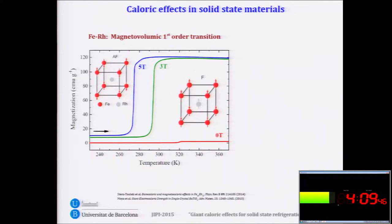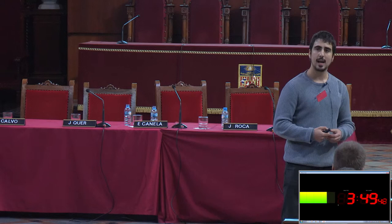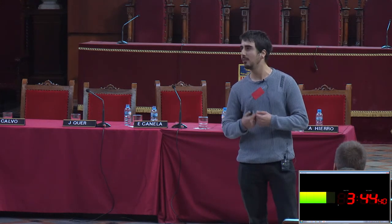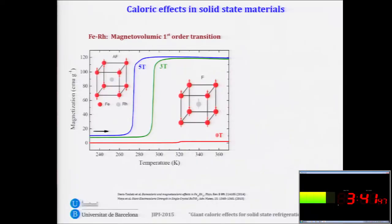For instance, let's see a couple of examples we have studied. We have iron rhodium, which is a very illustrative example, as it has a magnetovolumic first-order transition. Associated to this transition, we have a large magnetization change. We have a high-temperature ferromagnetic phase and a low-temperature antiferromagnetic phase. So if we apply a magnetic field at the antiferromagnetic phase, we are energetically favoring the high-temperature ferromagnetic phase, and so we can induce a large entropy and temperature change.